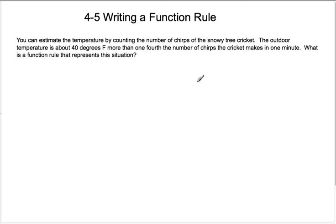You can estimate the temperature by counting the number of chirps of the snowy tree cricket. The outdoor temperature is about 40 degrees Fahrenheit more than one fourth the number of chirps the cricket makes in one minute. What is the function rule that represents this situation?